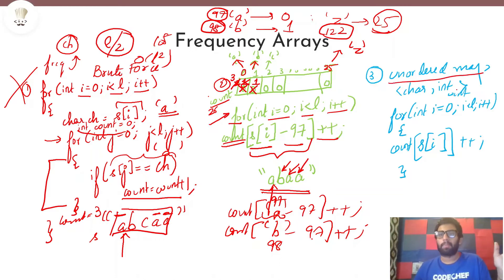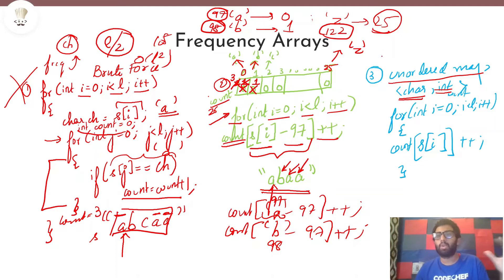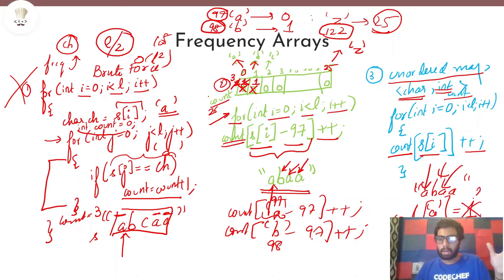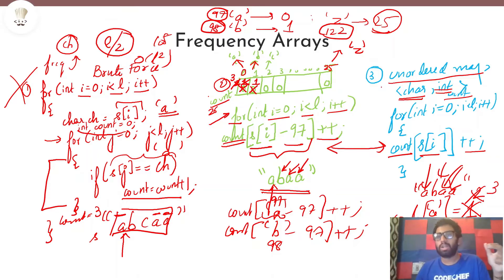You could also use an unordered map approach, which is very similar but uses a key-value pair mapping characters to integers. So you do not need to map characters from a to z to indices 0 to 25. Instead you just do count of s of i plus plus. For the same string 'abaa': count of 'a' becomes 1, then count of 'b' becomes 1, then count of 'a' becomes 2, then count of 'a' becomes 3. The only difference is you use an array of size 26 versus an unordered map.